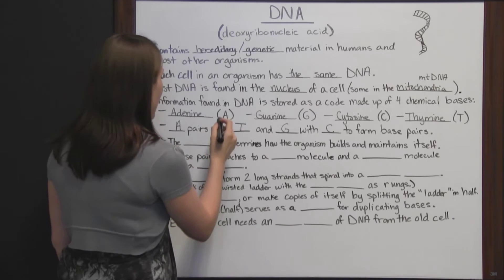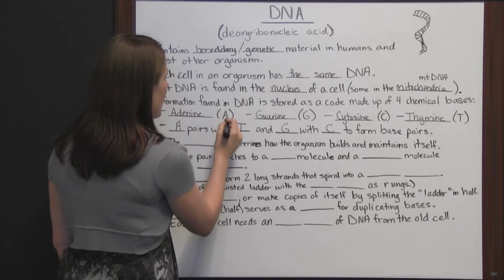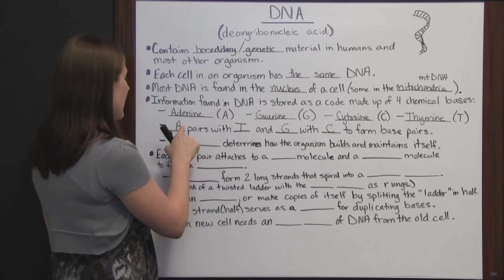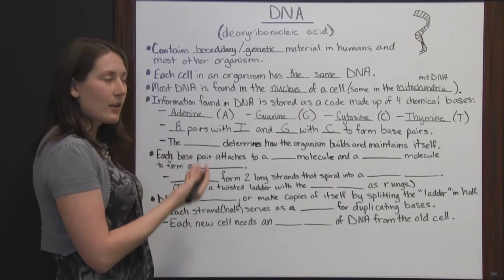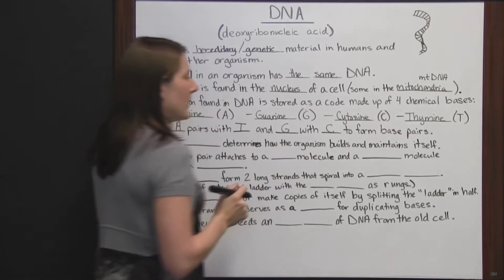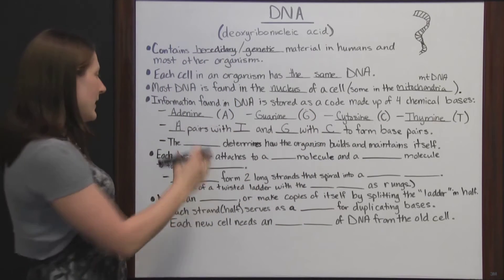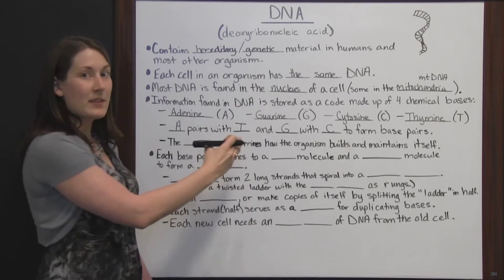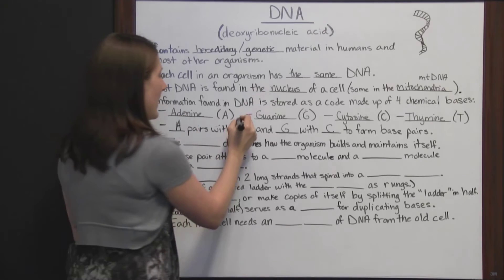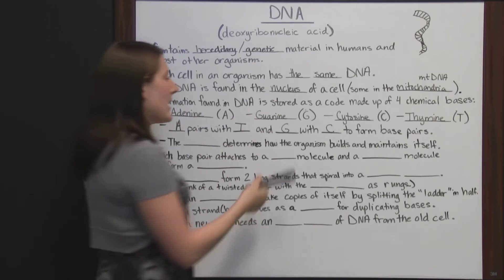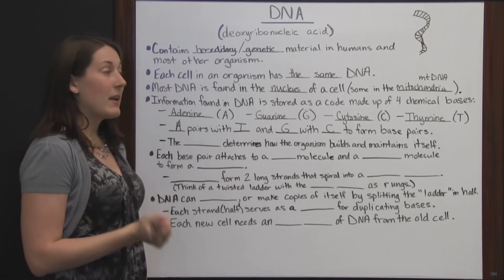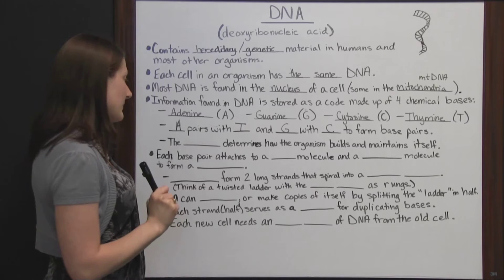A way to remember that is: the ones with straight lines in their abbreviation letter — A and T, which can be made with straight lines — go together, and the ones that require a curved line go together. That helps remember that adenine pairs with thymine, and guanine goes with cytosine because of the curved shape it takes to make each of those abbreviation letters.